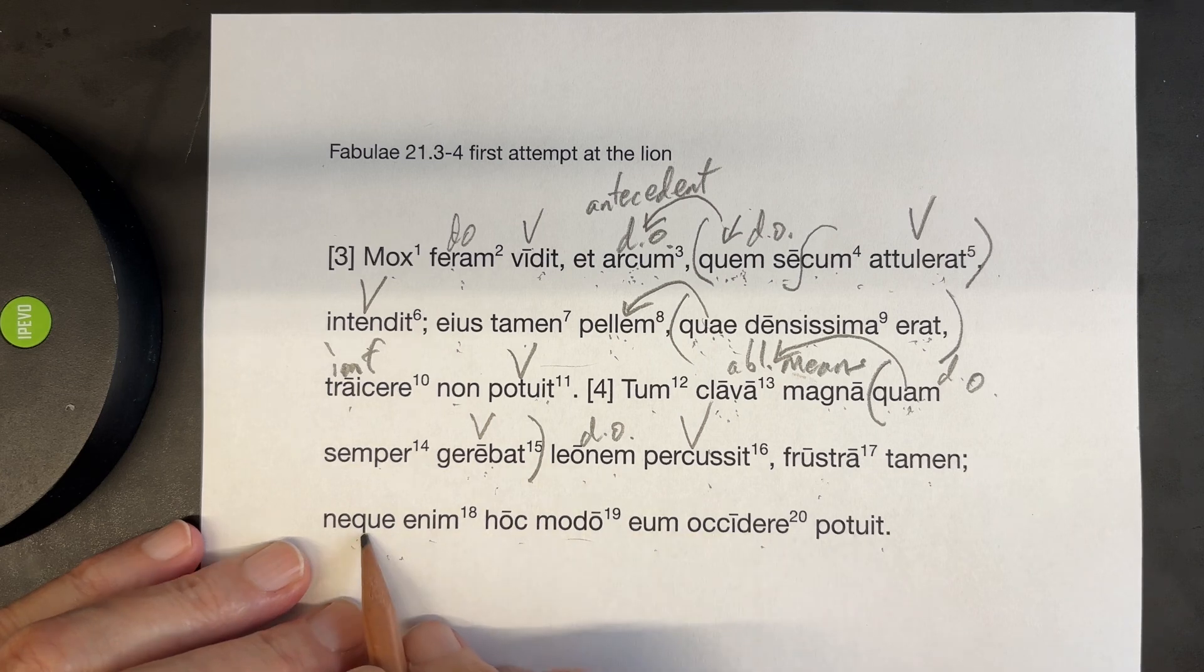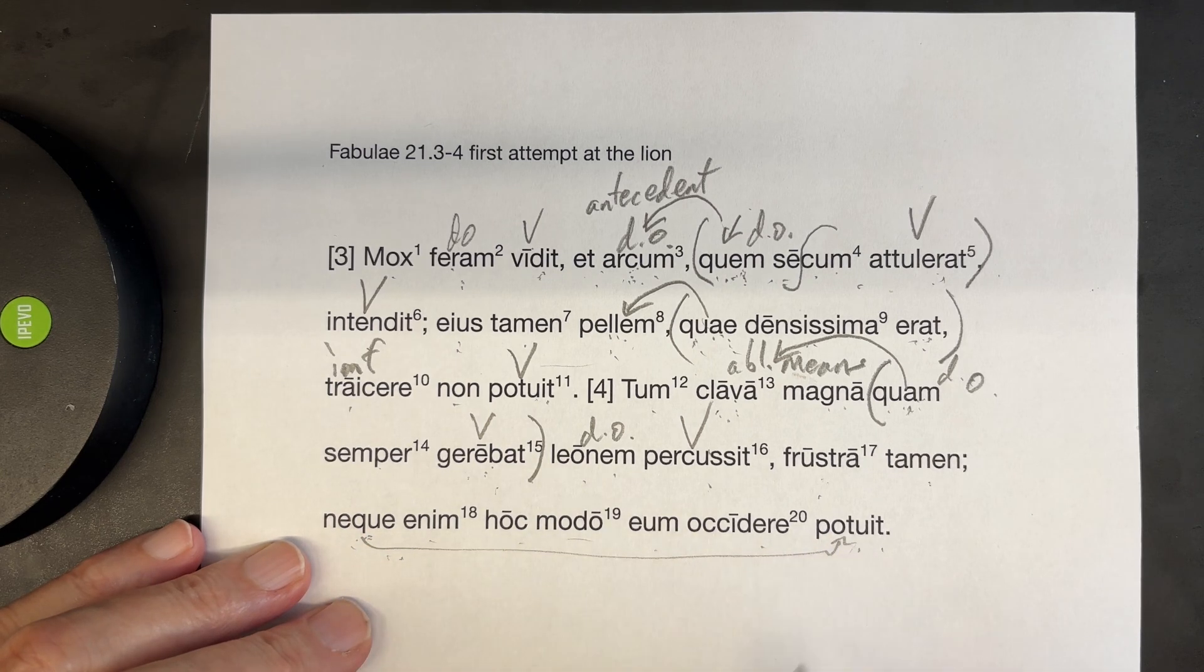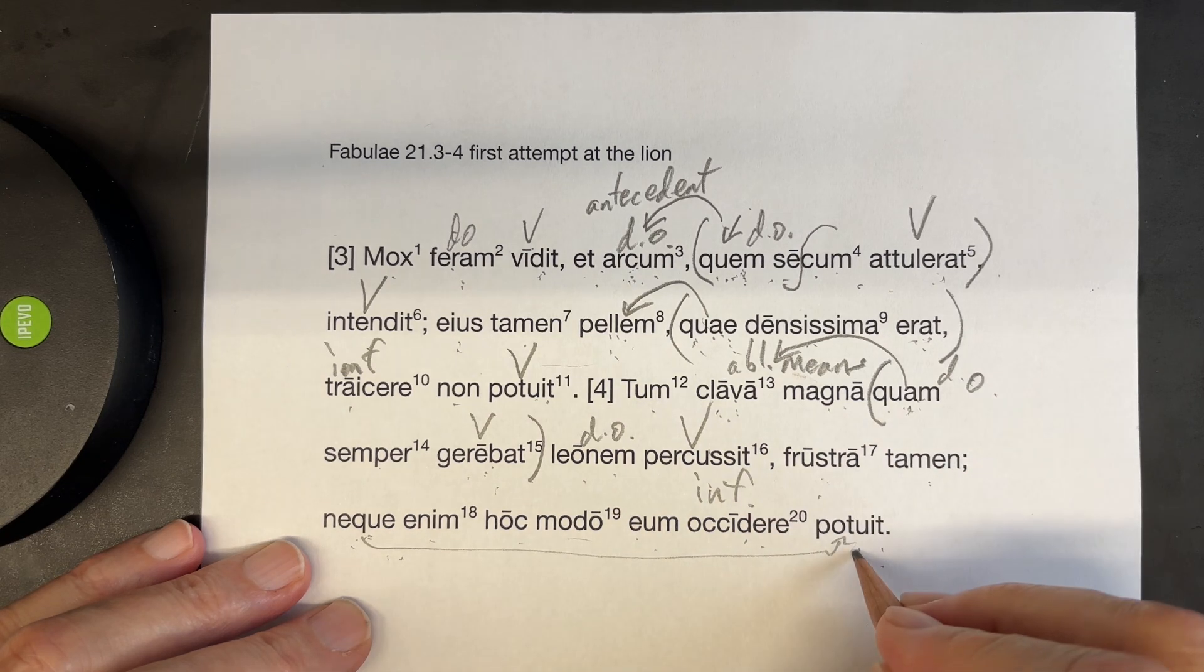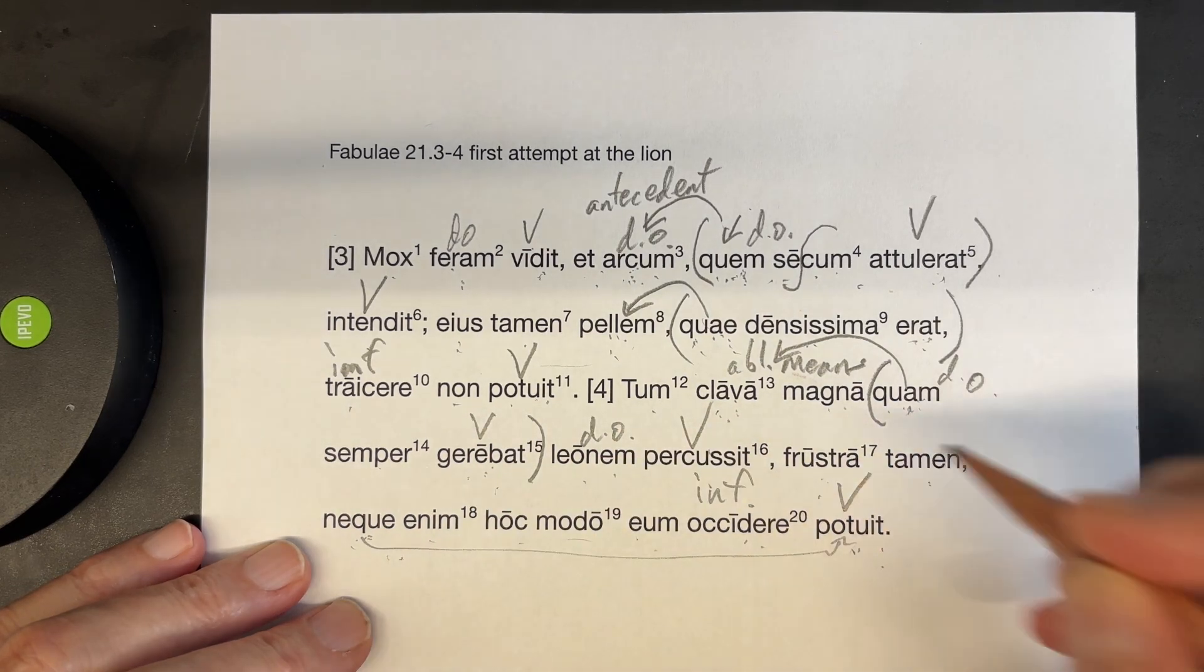neque enum hukmodo eemokidera puduit. For, he could not, now this negative goes with the puduit here, he could not, okidera, kill him. Infinitive again, with this puduit, just like up here, puduit, which is the main verb.